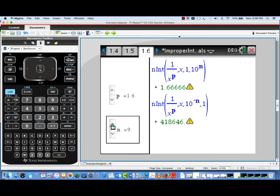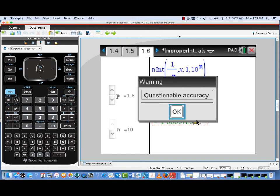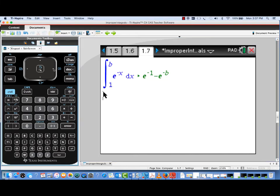As the n gets large, I can see that the Type 1 improper integral approximations look like they're approaching about 1 and 2 thirds, while the Type 2 improper integral approximations are getting very large. And note the warning that's given about the numerical accuracy of these results.